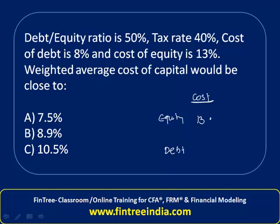First, we find the cost of each component. The cost of equity is given as 13%, so we take that as is. The cost of debt is given as 8%, however we know there is a tax benefit on debt, so we take the effective cost of debt: 8 × (1 - 40%) = 8 × 60% = 4.8%.